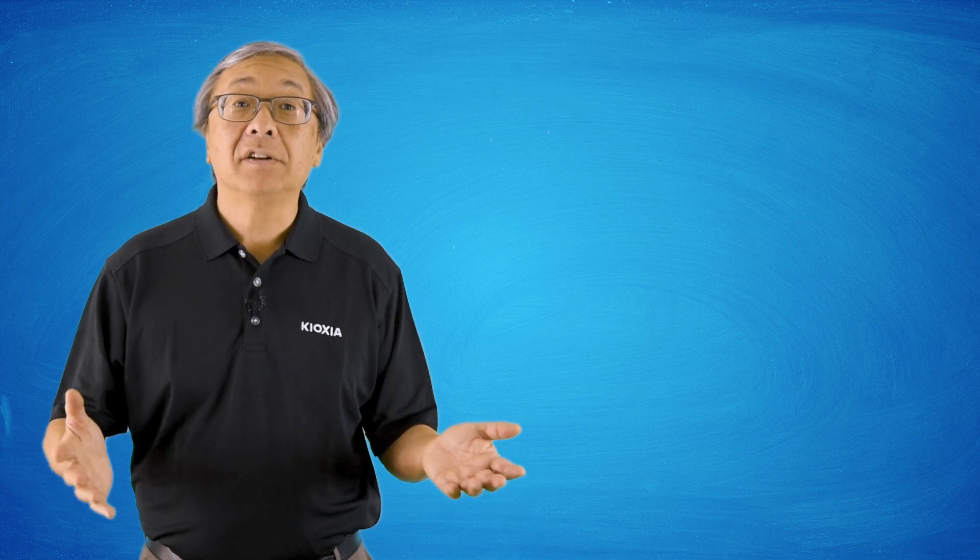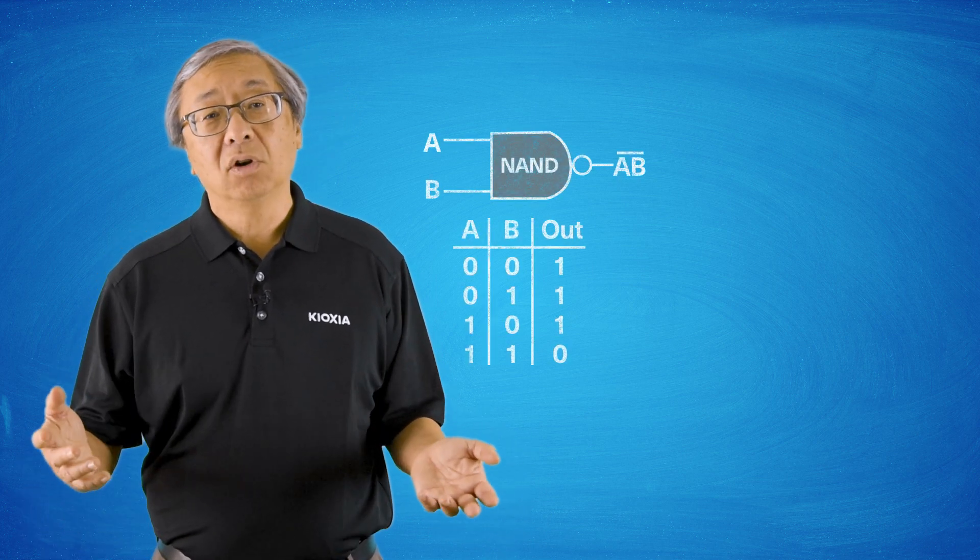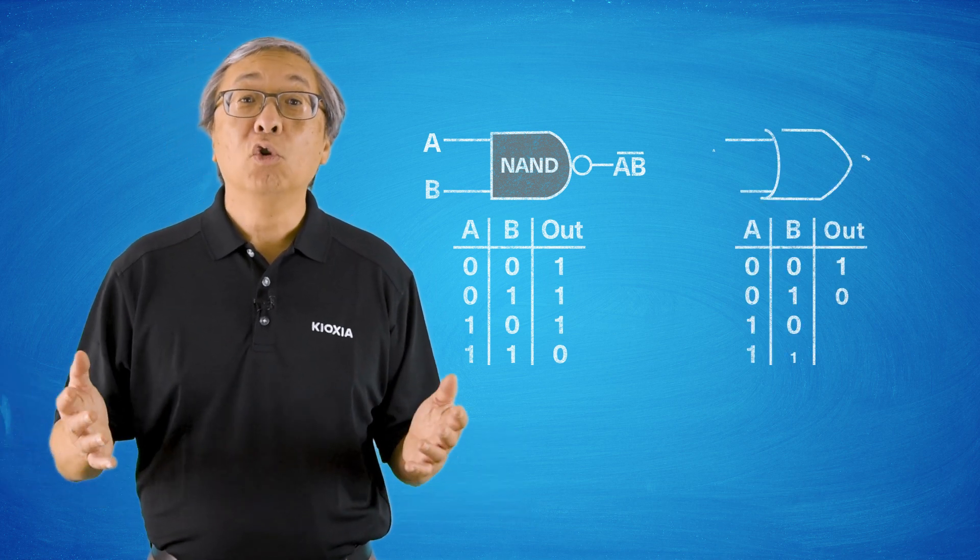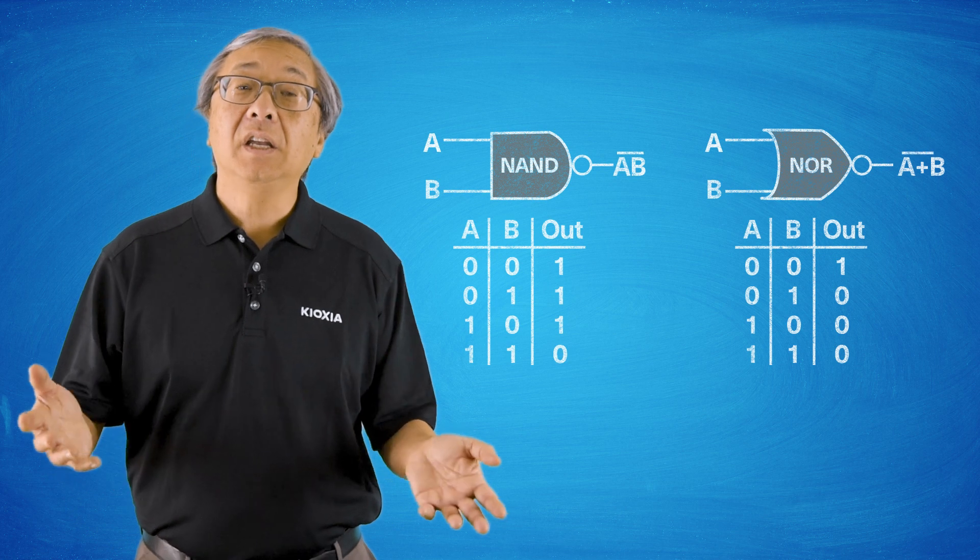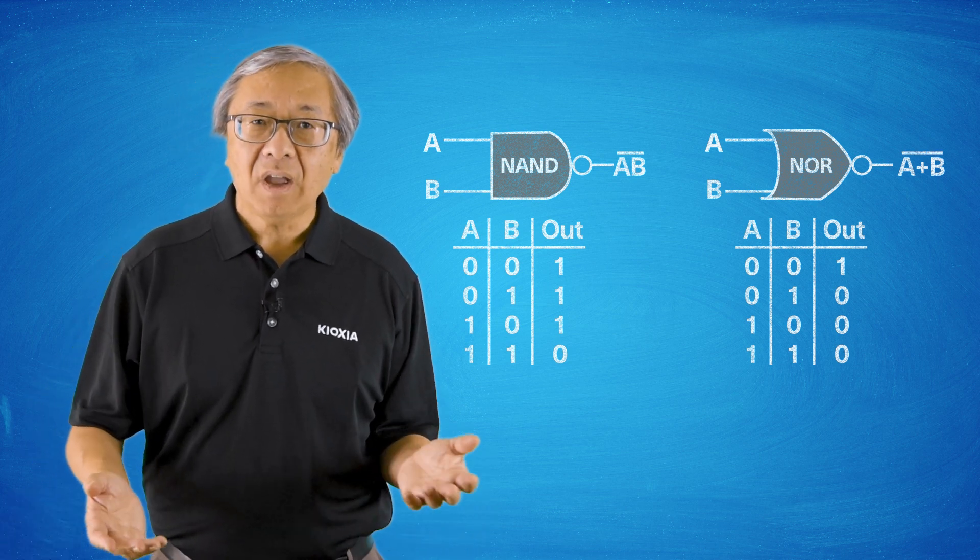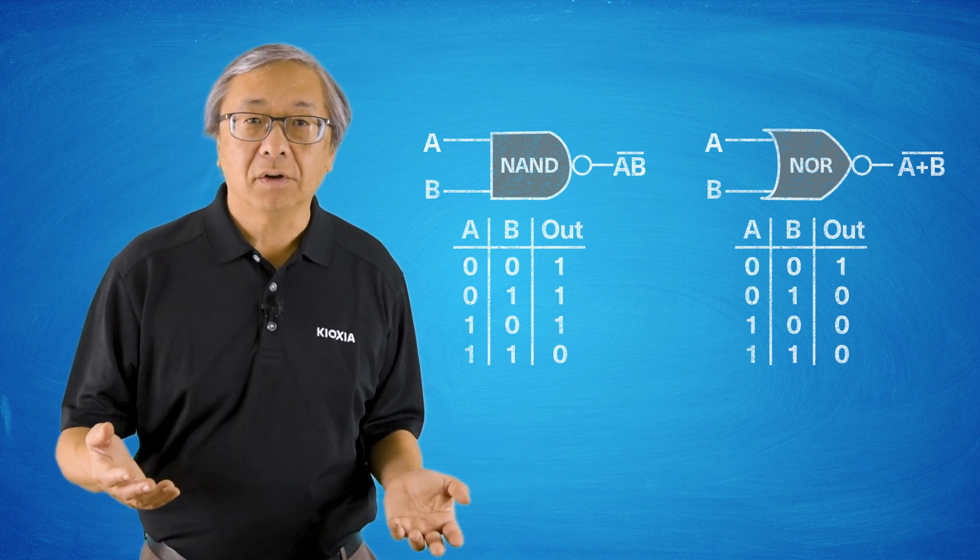This is essentially how the two got its name. It's the connection of the memory cells. Now in NAND Flash, it implements the NAND logic function. So if all the inputs are true, the output goes false. NOR Flash implements the NOR logic function. So if any of the inputs go true, the output goes false. And you can see that from the way the memory cells are connected together.